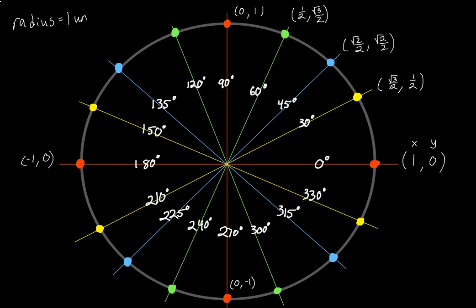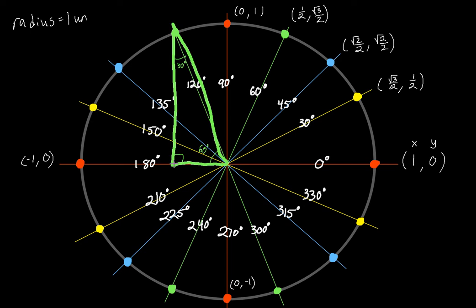Let's look at the 120° angle. Dropping a perpendicular gives a 30-60-90 triangle that is flipped over. I know it's a 30-60-90 because the distance from 120° to 180° is 60°, so the angle at the top must be 30° — since we already have a 90° from the perpendicular. It's the exact same triangle as before, just flipped, so the values are still 1/2 and √3/2. The only difference is now we're traveling to the left 1/2, so we have a negative x coordinate.